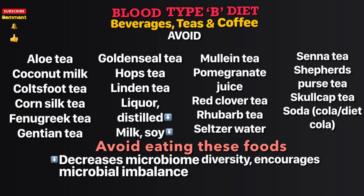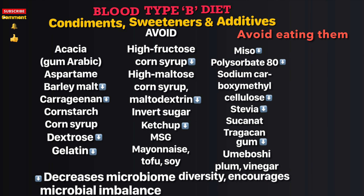More beverages to avoid: red clover tea, rooibos tea, seltzer water, senna tea, shepherd's purse tea, skullcap tea, soda (such as cola and diet cola), and tomato juice. Additives and condiments to avoid: acacia gum (arabic), aspartame, barley malt, carrageenan, cornstarch, corn syrup, dextrose, gelatin, high fructose corn syrup, high maltose corn syrup, maltodextrin, invert sugar, ketchup, MSG, mayonnaise, tofu, soy miso, polysorbate 80, sodium carboxymethyl cellulose, stevia, sucanat, tragacanth gum, and umeboshi plum vinegar.